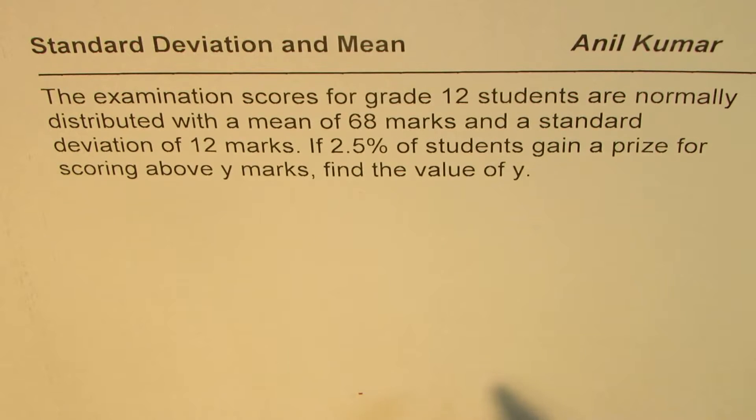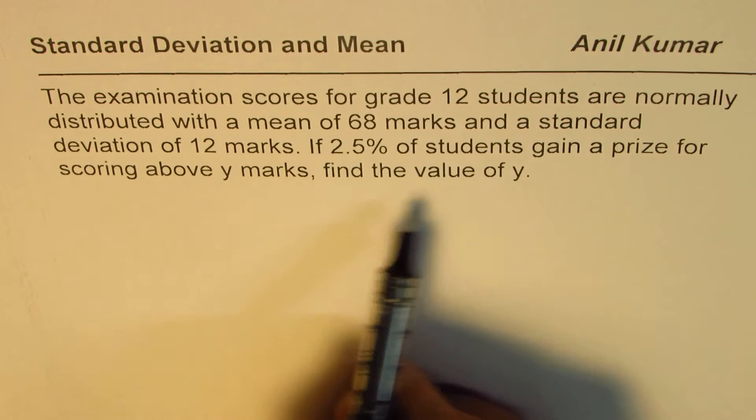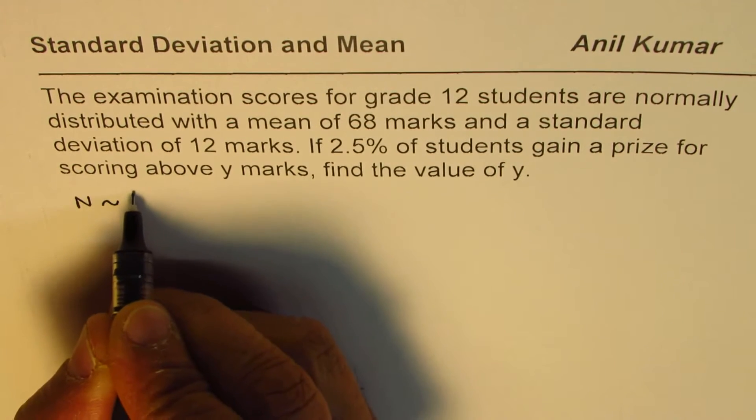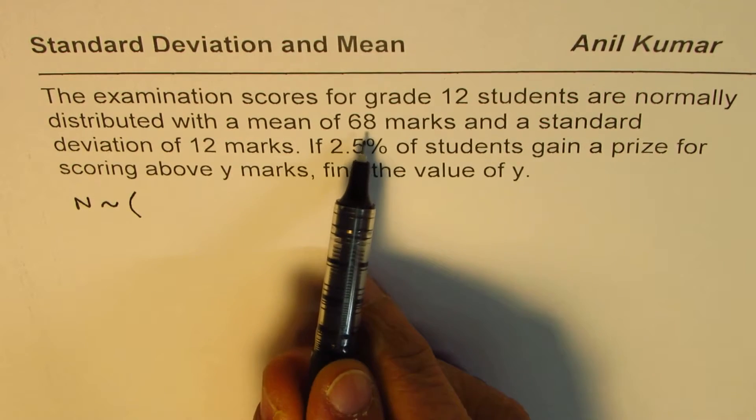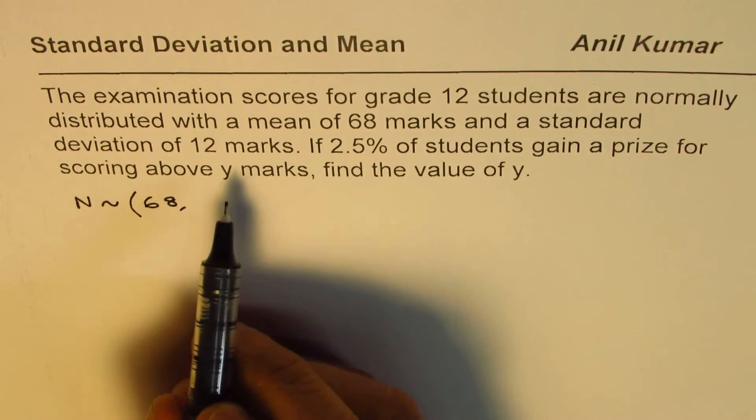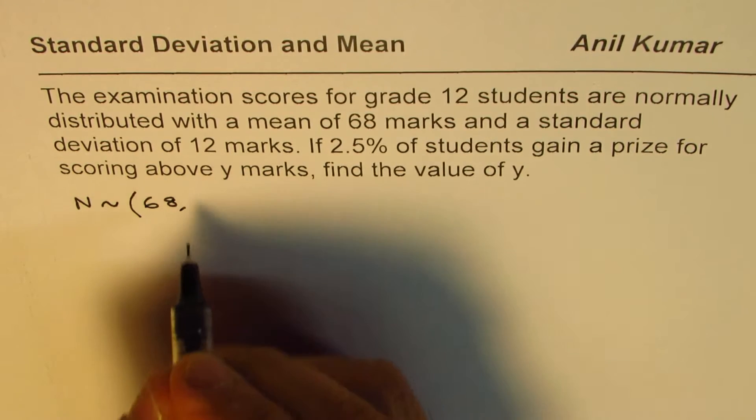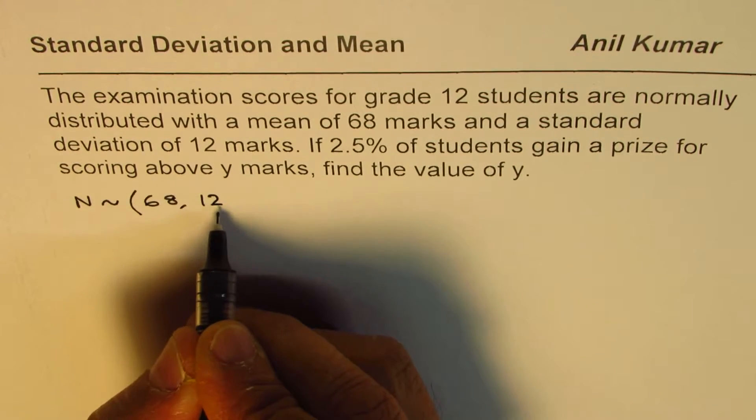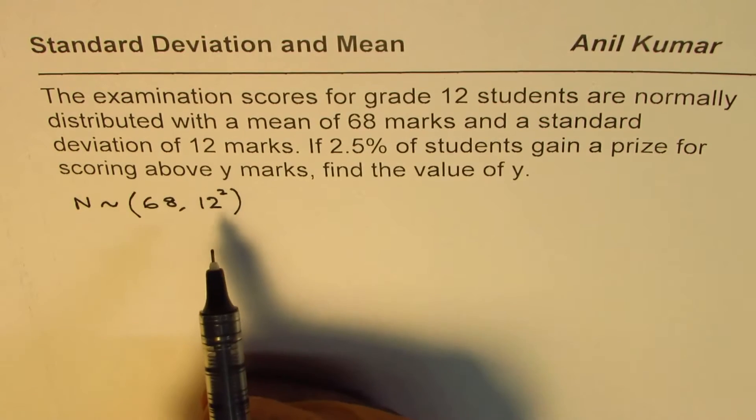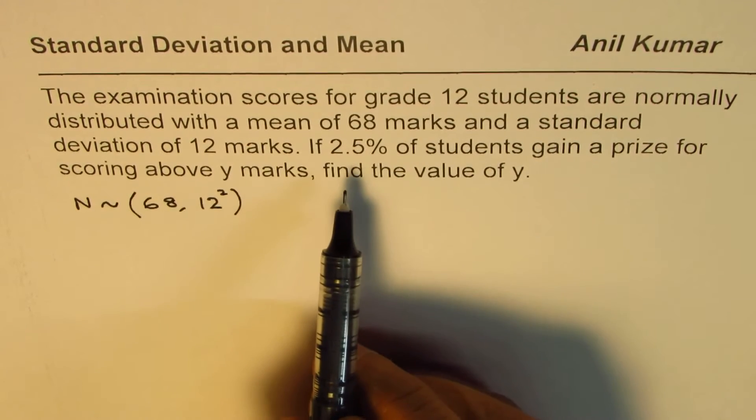Now I'll take this opportunity to also explain a few basic concepts about normal distribution and then we will solve this question. What we are given here is a normal distribution. In this distribution we are given the average or the mean which is 68, and the standard deviation is 12. Sometimes we write standard deviation, sometimes we write it squared.